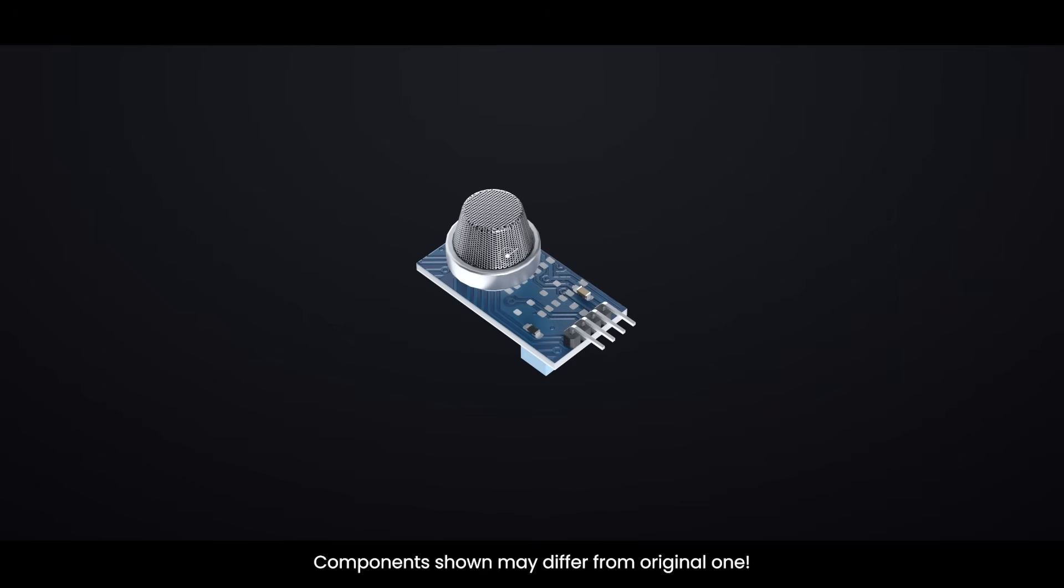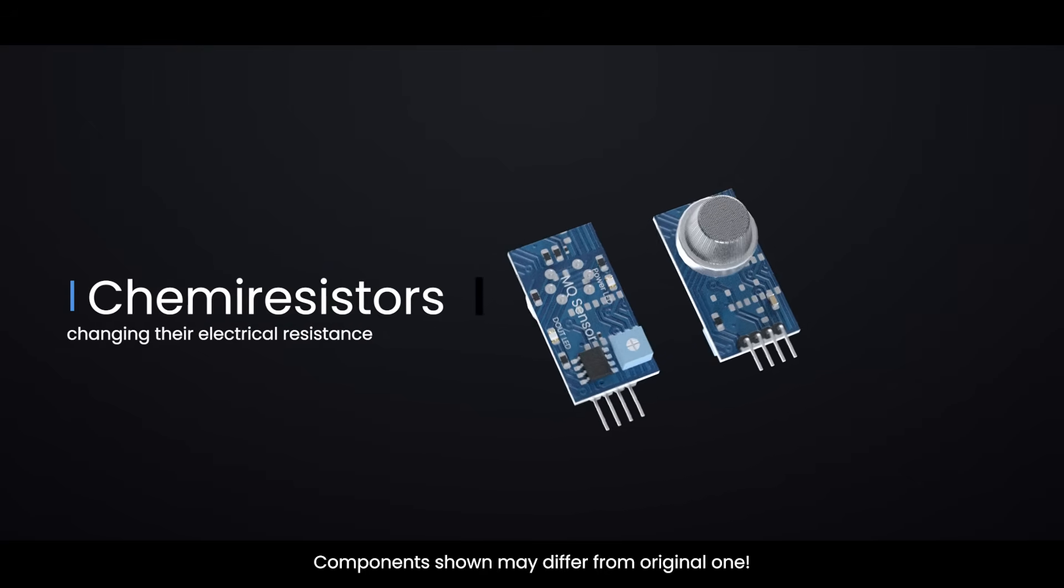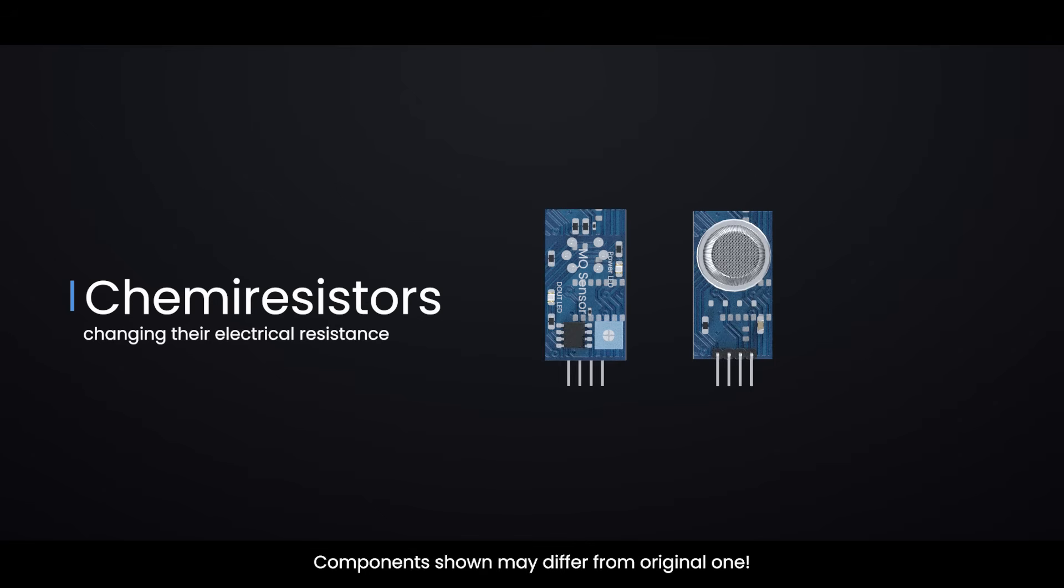The MQ2 sensor is one of the most popular sensors in the MQ family. It is a type of MOS, metal oxide semiconductor sensor. These kinds of sensors are also called chemiresistors because they work by changing their electrical resistance when they come into contact with certain gases.